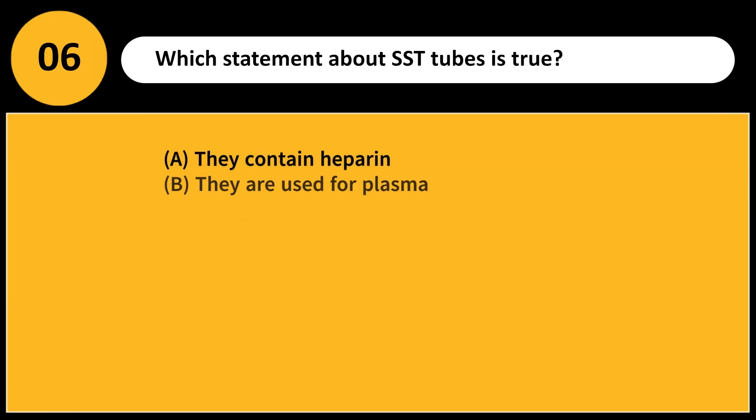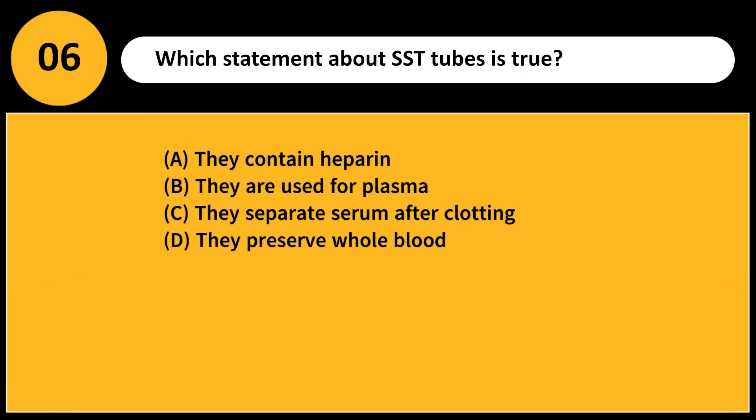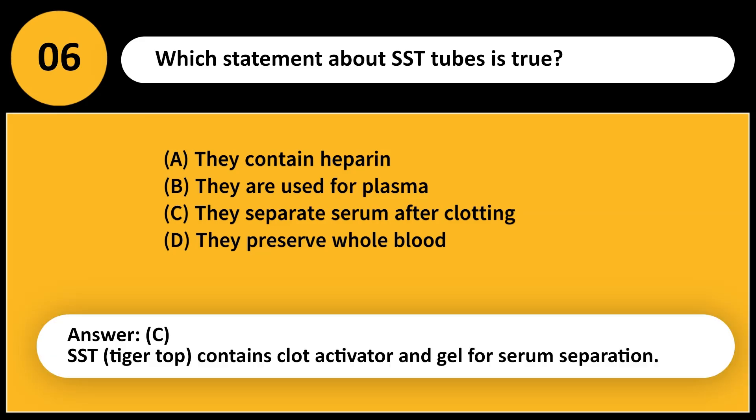Which statement about SST tubes is true? A. They contain heparin. B. They are used for plasma. C. They separate serum after clotting. D. They preserve whole blood. Answer: C. SST, or tiger top, contains clot activator and gel for serum separation.